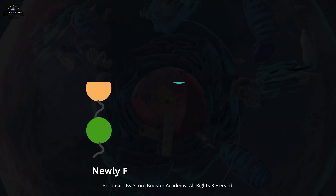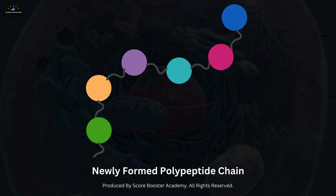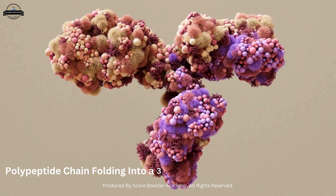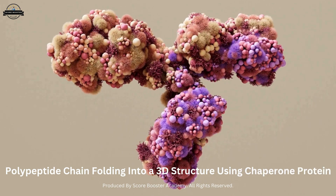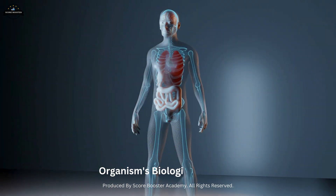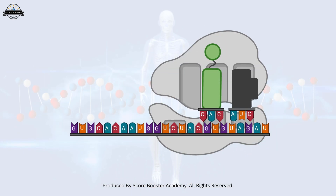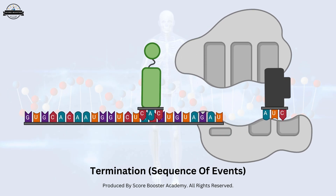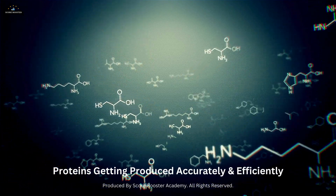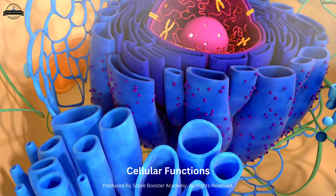The newly formed polypeptide may undergo post-translational modifications, including folding into its three-dimensional structure with the help of chaperone proteins. This protein is then ready to perform its specific role within the organism's biological systems. This entire process, from initiation to termination, exemplifies the efficiency and precision of cellular machinery, ensuring that proteins are accurately and efficiently produced to sustain cellular function and respond to the ever-changing needs of the organism.